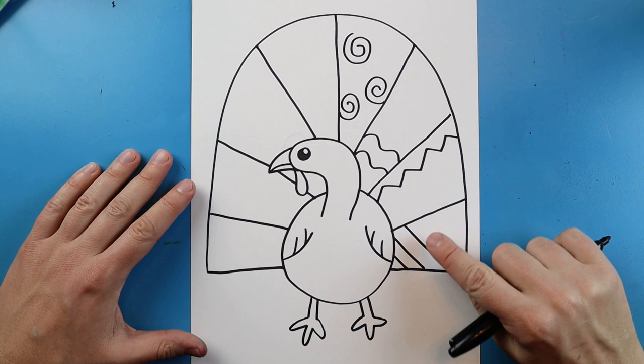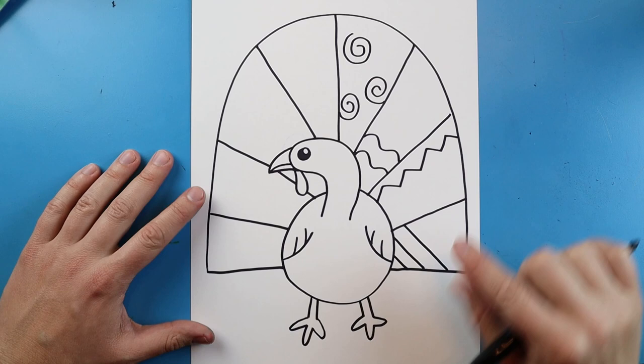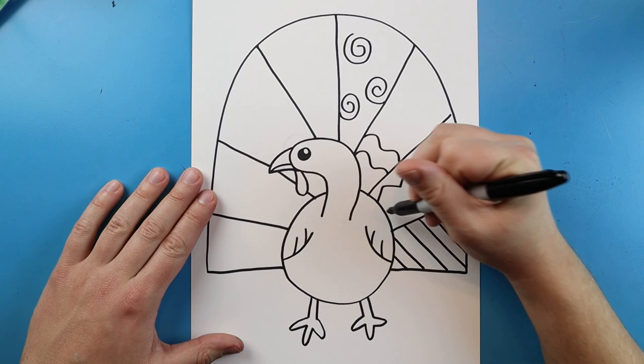There's so many different types of lines you can make. So what I want you to do is I want you to fill up all of your turkey feathers with a different type of line pattern. Don't use the exact same one in each one. Do a bunch of different ones in each one.